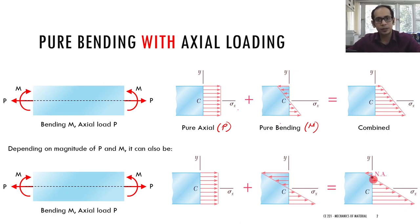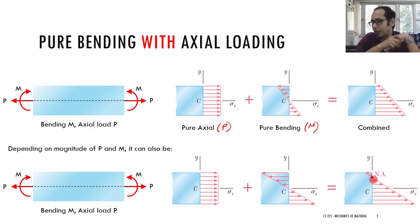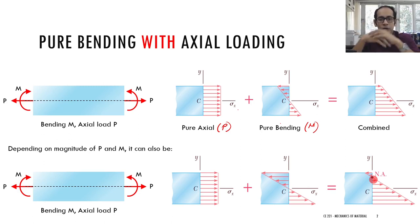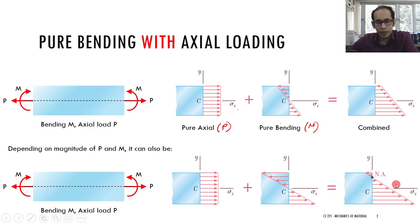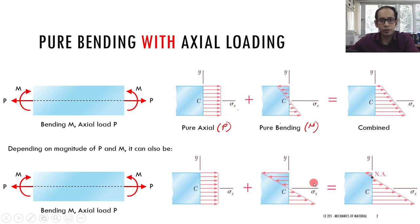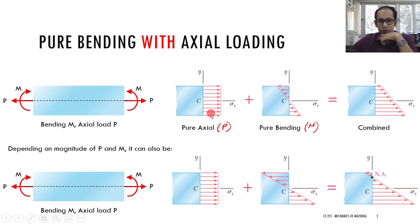In between, the neutral axis will shift. The neutral axis coincides with the centroid only in the case of pure bending when the material is homogeneous throughout. By definition, the neutral axis is the axis along which you have no stress, no strain, and no deformation. So the neutral axis, which was initially at the center, shifts under the action of combined bending and axial loading.